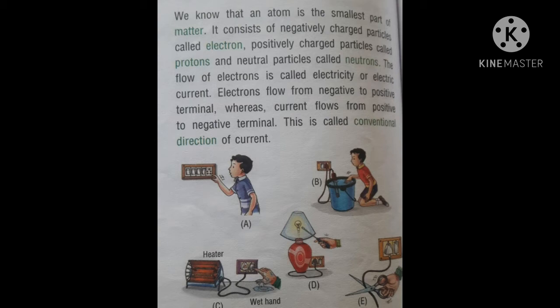Electrons flow from negative to positive terminal, whereas current flows from positive to negative terminal. This is called conventional direction of current, which is taken opposite to the direction of electrons.